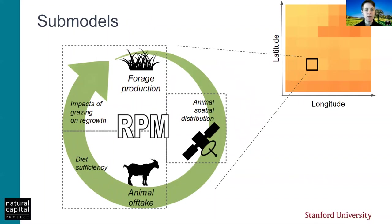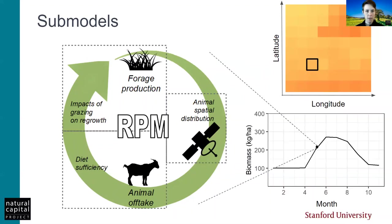So the model is basically designed to answer the question: given a set of possible changes in climate and livestock management, what are the likely consequences for rangeland condition and animal condition? There are three main submodels: the forage production submodel, the animal spatial distribution submodel, and the animal offtake and diet sufficiency submodels. The model extends over both space, as you see in this map, and time. Each of these processes is simulated at each monthly time step and for each pixel of the study area.